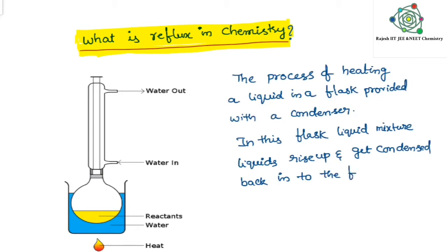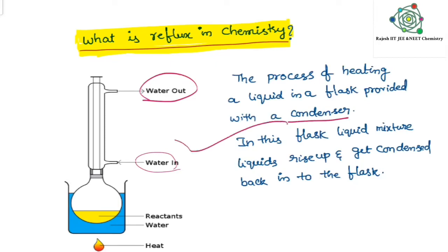In reflux, a liquid mixture is heated. The liquid with a low boiling point rises up — meaning it evaporates — and gets condensed back into the flask. The condenser has water in and water out. The evaporated liquid is condensed again by the condenser.